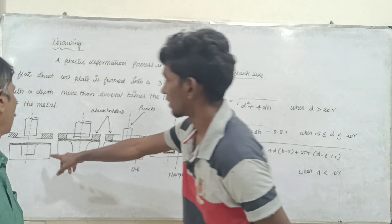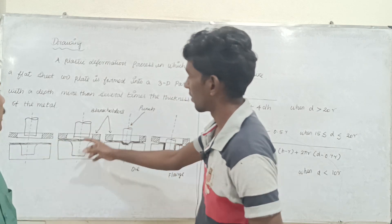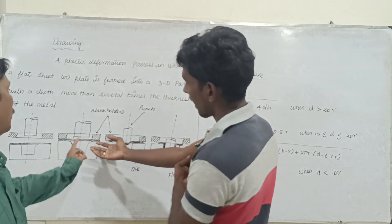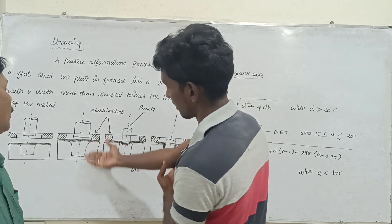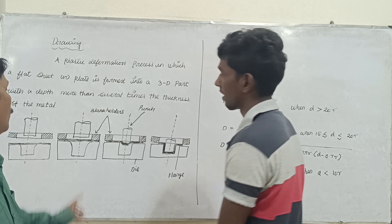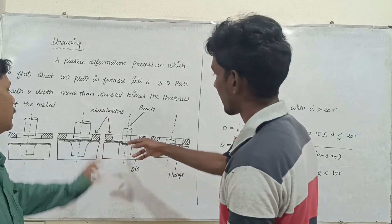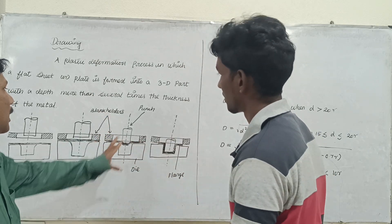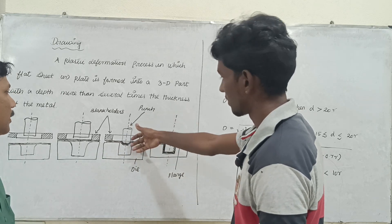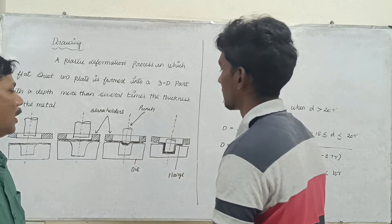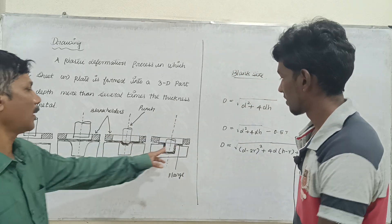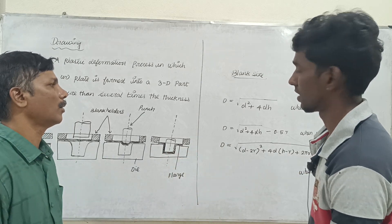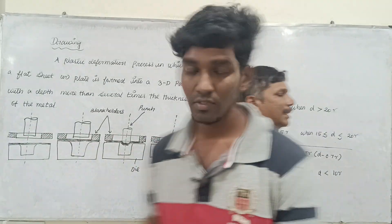First, you have a sheet. You have to apply the die. You have to press the die — there are blank holders. You have to punch the sheet. The pattern is a record shape. You have to press the blank.